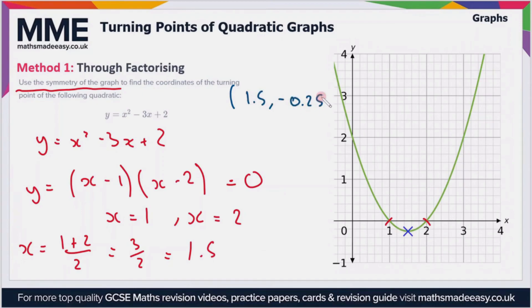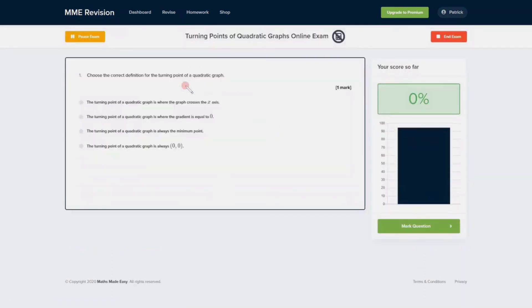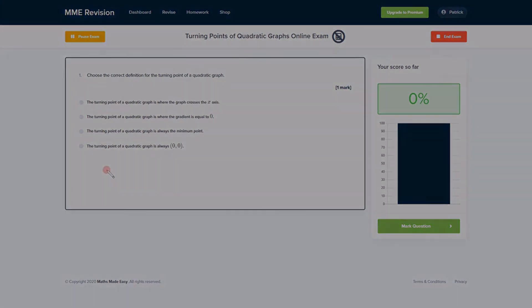If you found this video useful and you'd like to get some practice with turning points of quadratic graphs, we do have an online exam available. You can get there through our revision platform or you can click the link below. There's a variety of different questions, loads of different question types, and you get instant feedback on each and every one. This is really useful if you want to keep track of the areas that you need to improve at.